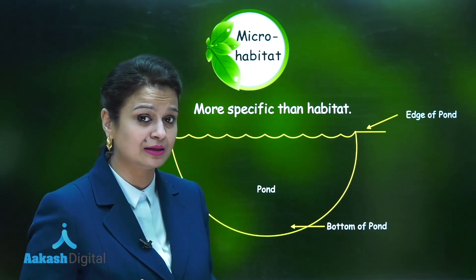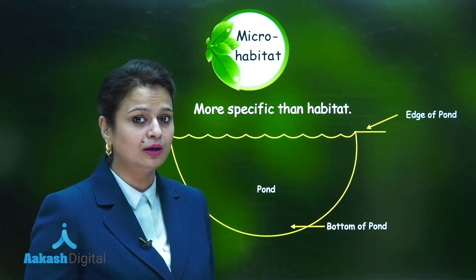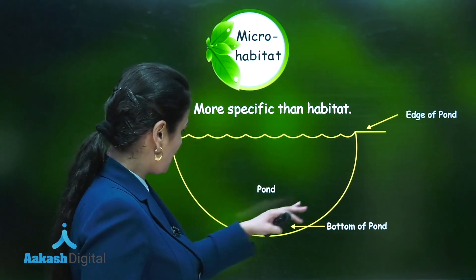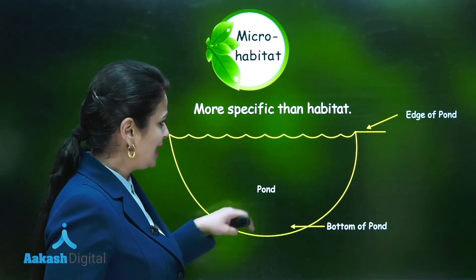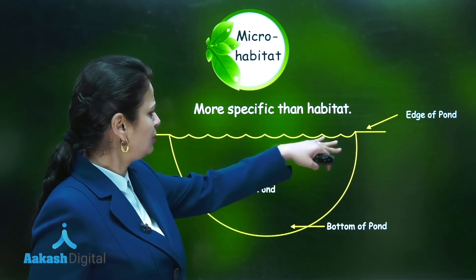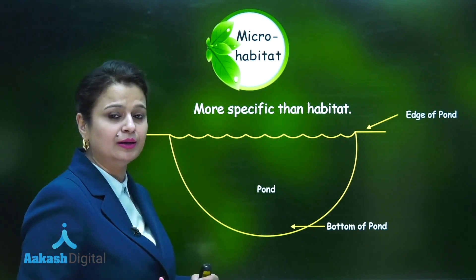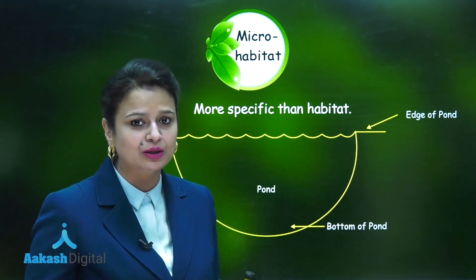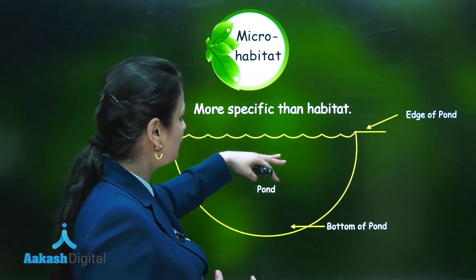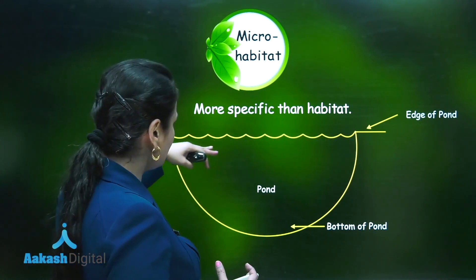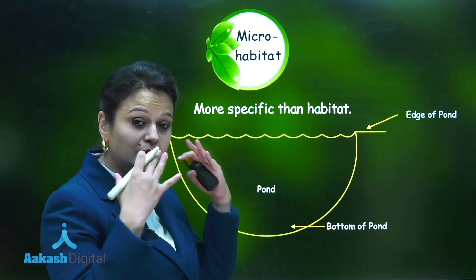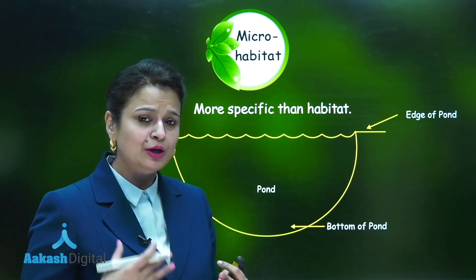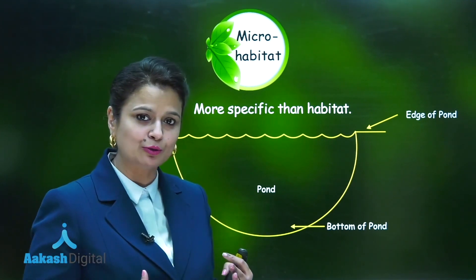Spirogyra's habitat is a freshwater pond, but where exactly is it found — at the bottom, at the edge, or is it free-floating? Spirogyra is not attached to the bottom; rather it is free-floating in a specific area. That specific area represents the microhabitat of that organism — microhabitat means becoming more specific.